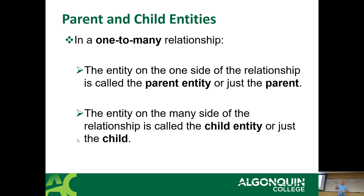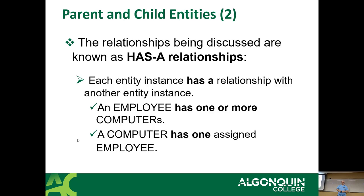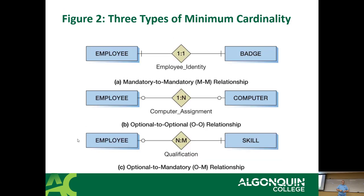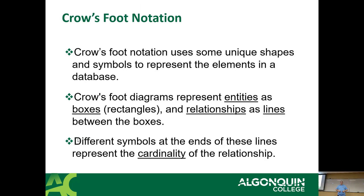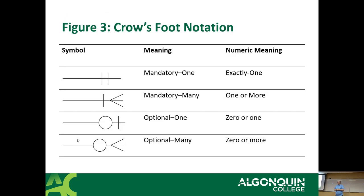Parent-child relationships — I covered that too, those are one of many relationships. Minimum cardinality — we covered that one too. This is going to make today's slides go really fast because I'm skipping stuff we've already covered. Crow's foot notation — I think I covered that last week, but I am going to go over it again this week because it's actually important. This is where we pick up new material. Crow's foot notation uses unique shapes and symbols to represent the elements in a database.